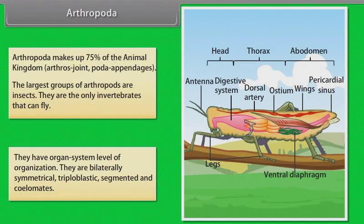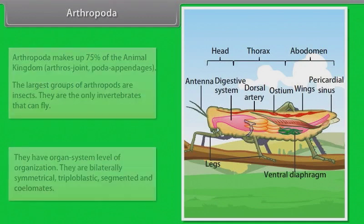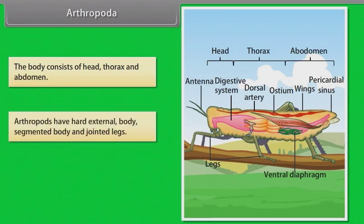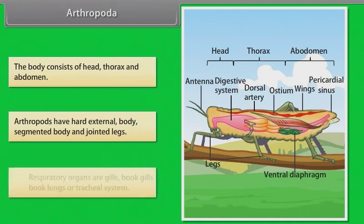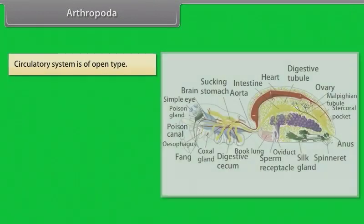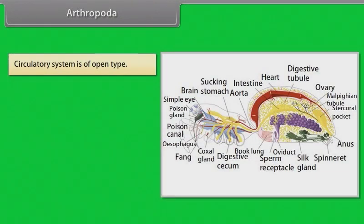Arthropods are bilaterally symmetrical, triploblastic, segmented and coelomate. The body consists of head, thorax and abdomen. They have a hard exoskeleton, segmented body and jointed legs. Respiratory organs are gills, book gills, book lungs or a tracheal system. The circulatory system is of open type.